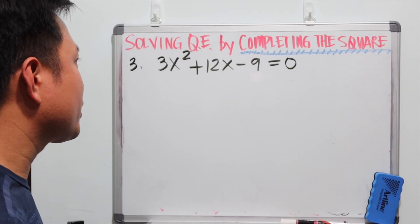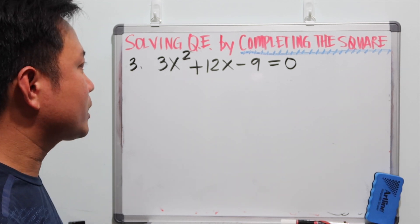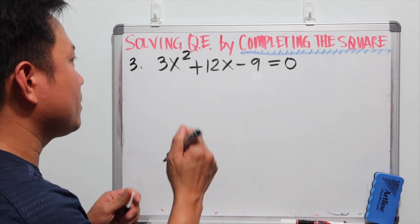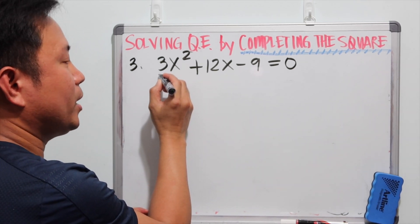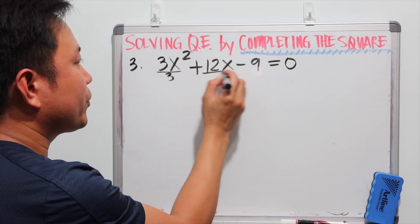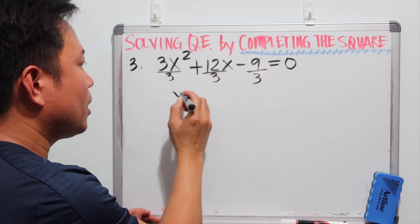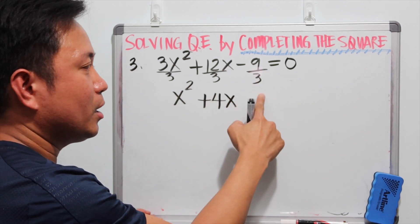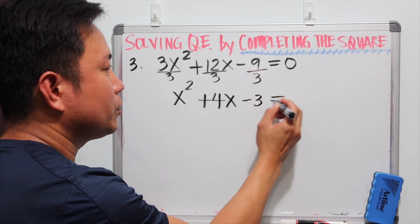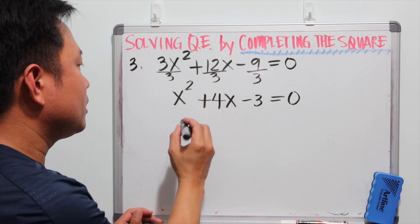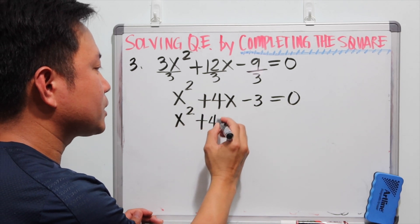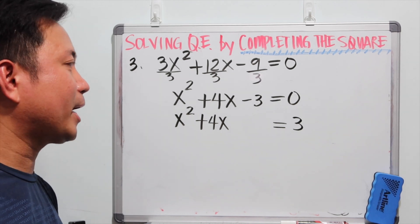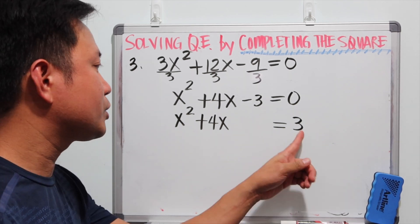In example number 3, we have 3x squared plus 12x minus 9. Again, what's the first step? We divide everything by the a value, so we divide everything by 3. When you divide each term by 3, it becomes x squared plus 4x minus 3 is equal to 0. Then we have x squared plus 4x is equal to positive 3, transposing negative 3 to the right side.